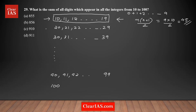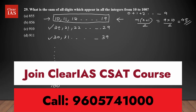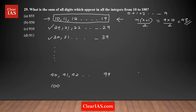Similarly, every other set has the same unit digits 0 through 9, so the unit place sum is 45 for each. There are nine sets total — the 10s, 20s, 30s through 90s. So the total sum of unit place digits is 45 × 9 = 405.